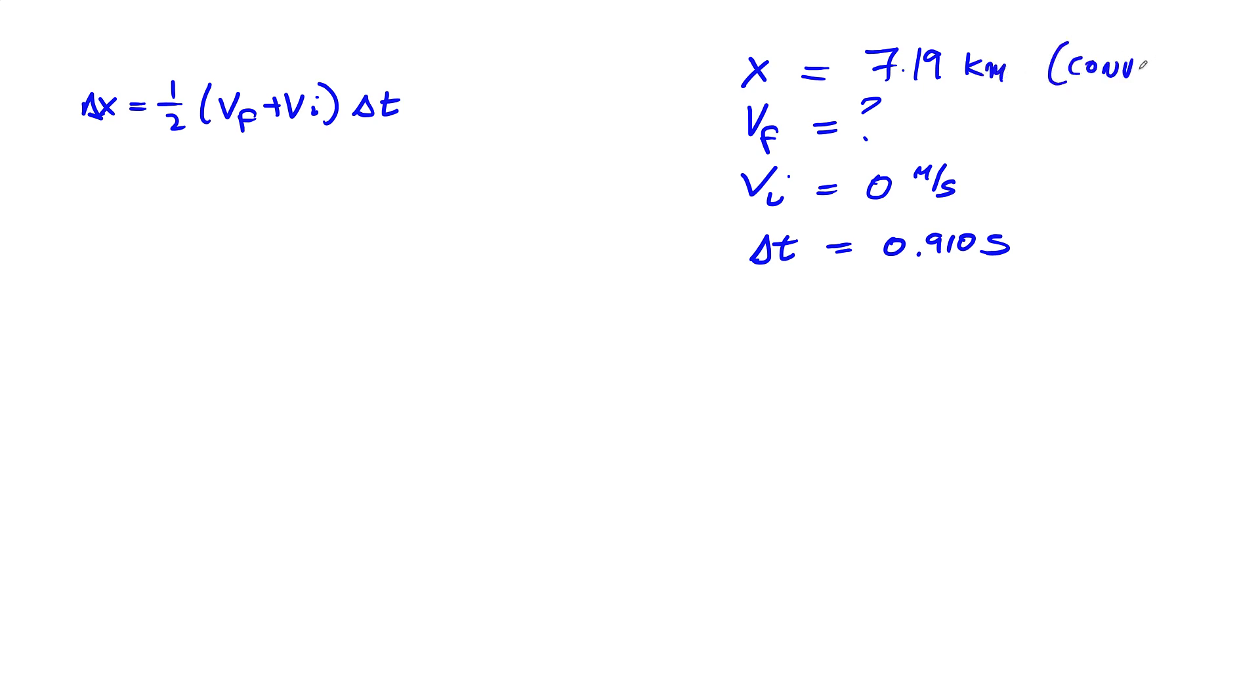I'm going to say convert because we need to have it in meters. So x, that's 7.19 kilometers. I'm just going to put 1000 meters for 1 km. That's going to be 7190 meters, and that is my displacement.